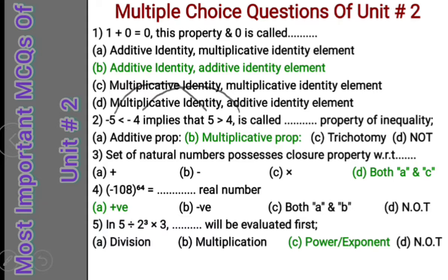Question 5: In the expression 5 divided by 2 power 3 into 3, what will be evaluated first? Whenever an expression has a power or exponent, we evaluate that first before division, multiplication, addition, or subtraction. So in this expression, two power three will be evaluated first — the priority is given to the power or exponent. C is the correct answer.